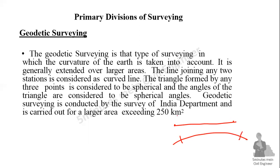In geodetic surveying, the triangle formed by any three points is considered to be spherical, and the angles of the triangle are considered spherical angles. Geodetic surveying is conducted by the Survey of India department and is carried out for areas exceeding 250 km².